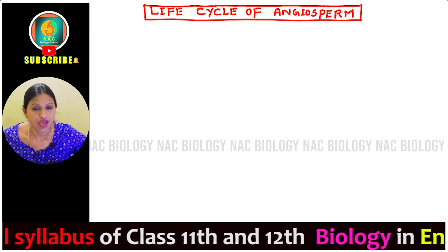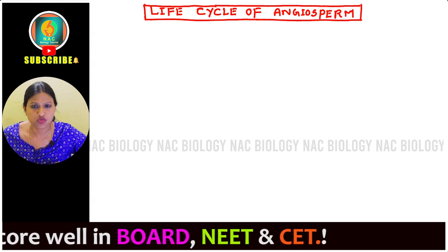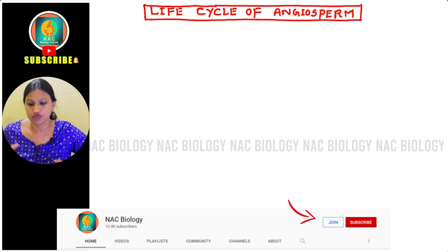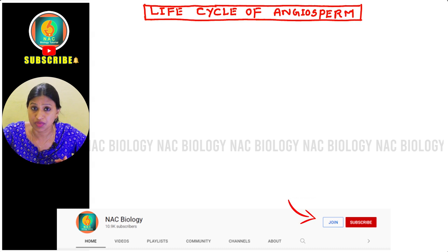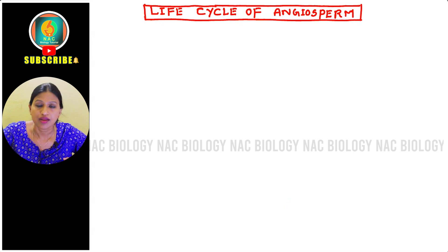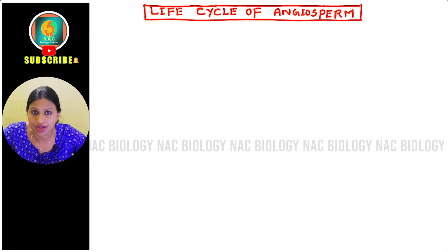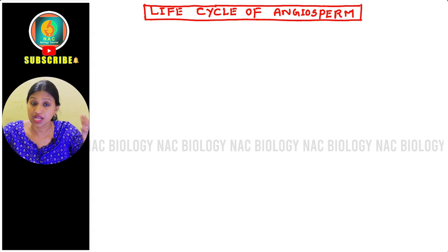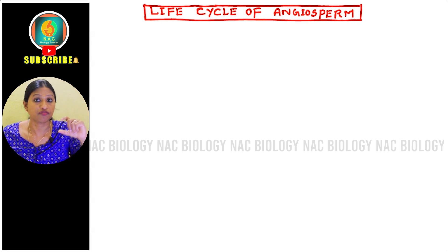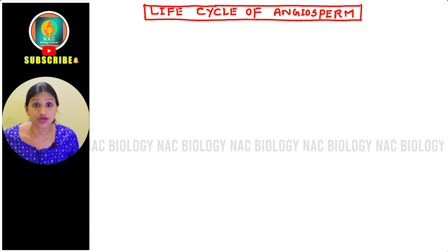One thing I want you to understand is that many students get confused about whether a flowering plant is a sporophyte or a gametophyte. Remember: whichever part gives rise to a microspore or a megaspore, we consider that plant as a sporophytic plant. The angiosperm is a sporophyte because, from the stamen's anther, microspores are formed, and from the pistil, megaspores are formed — so it is a spore-producing structure, therefore a sporophyte.